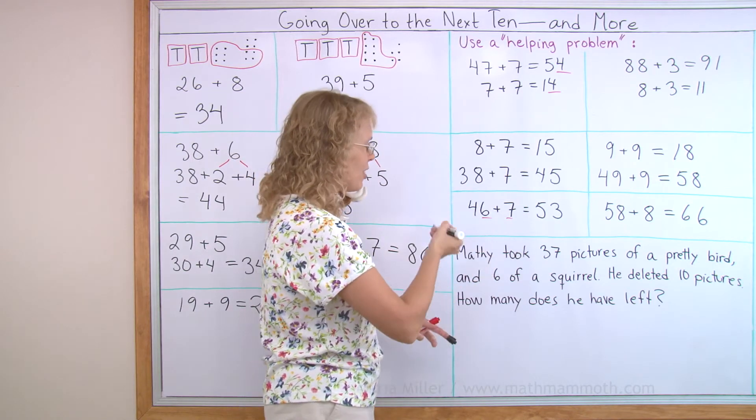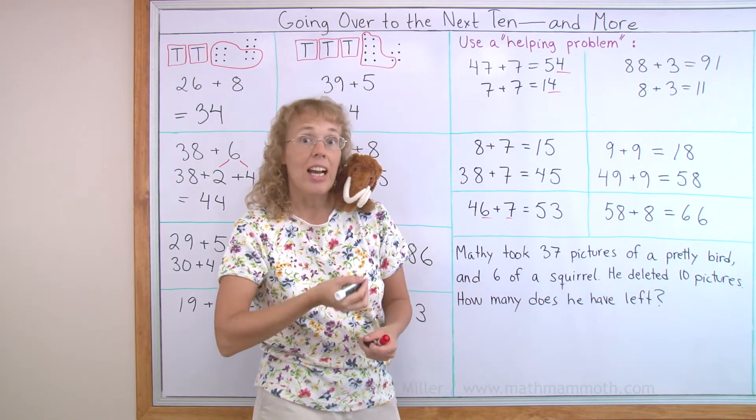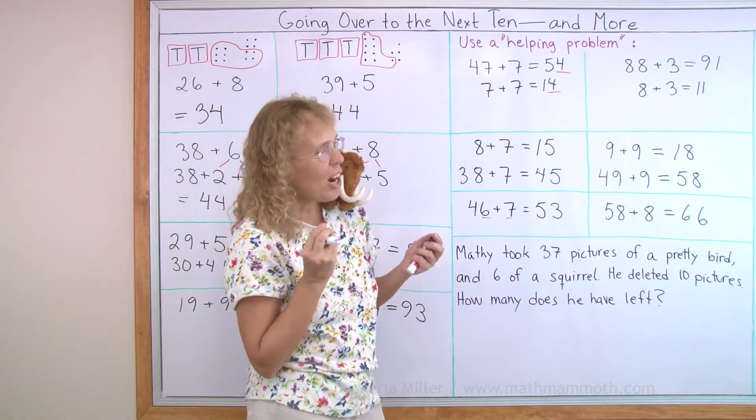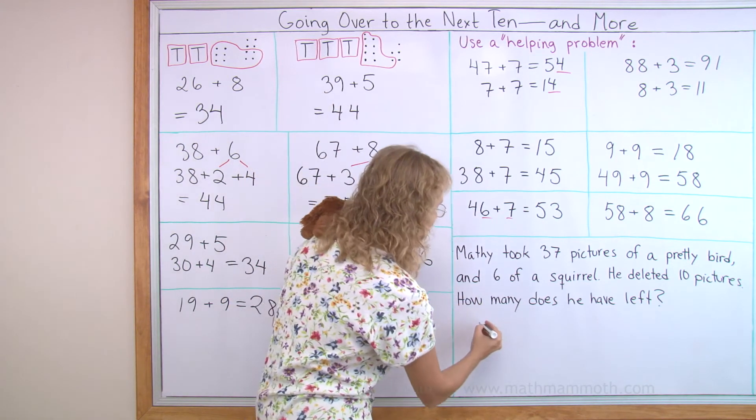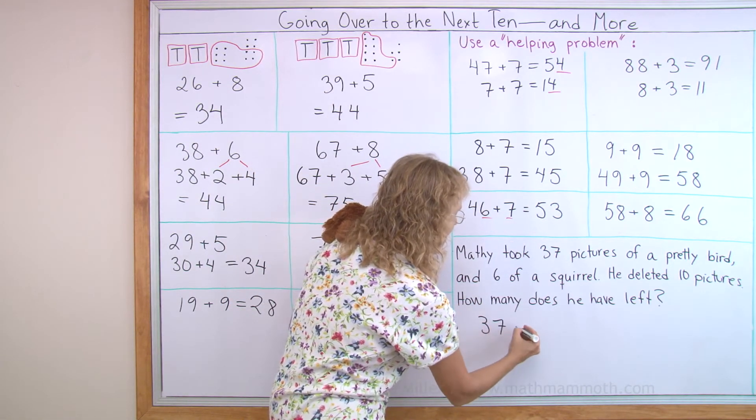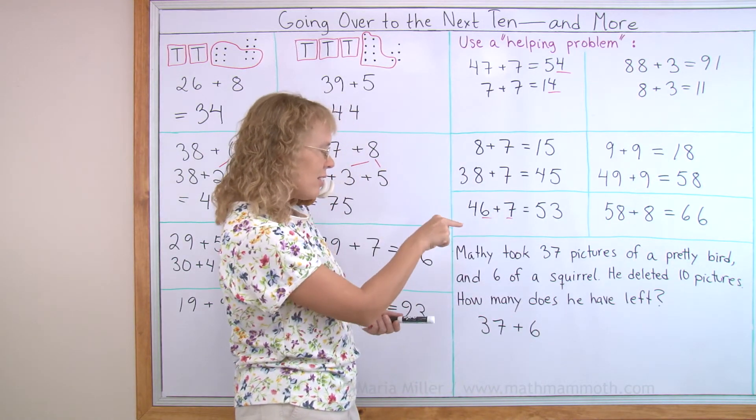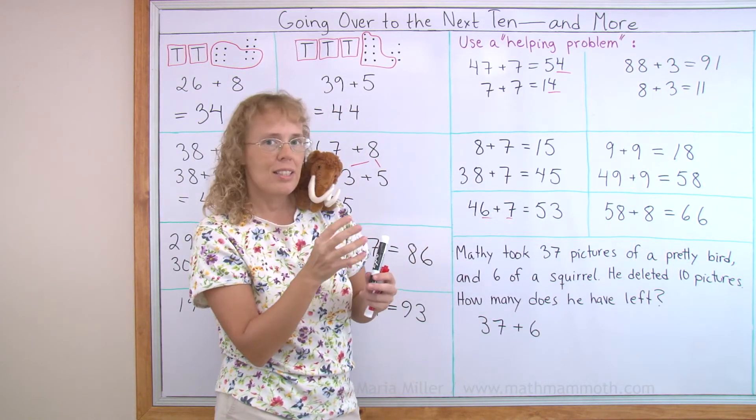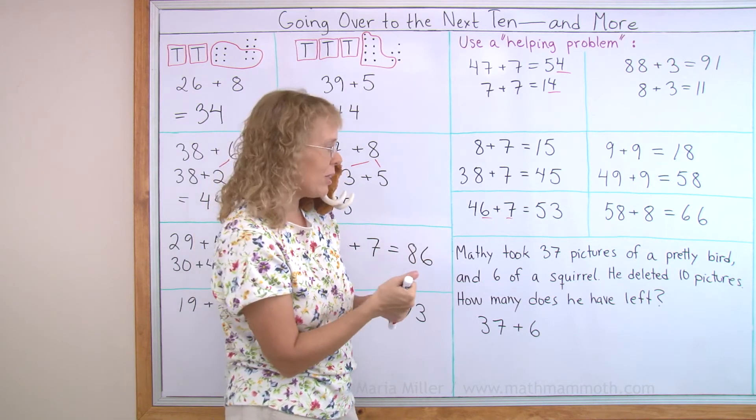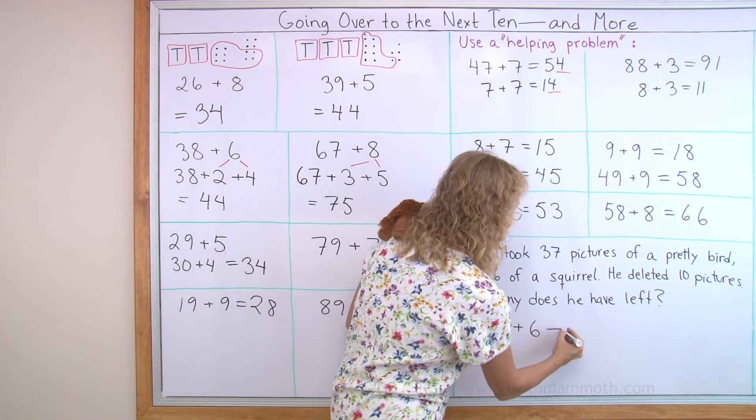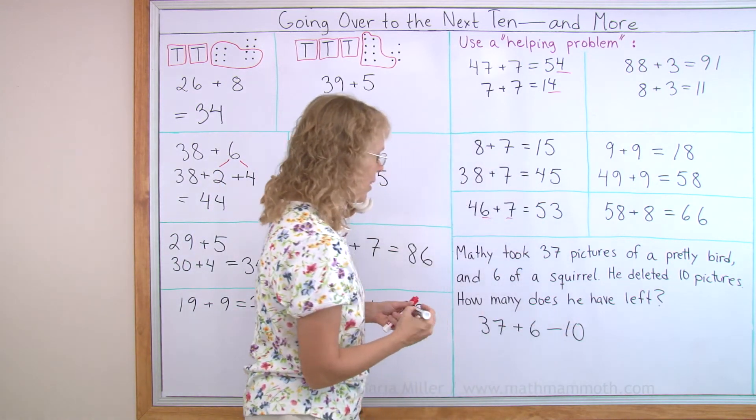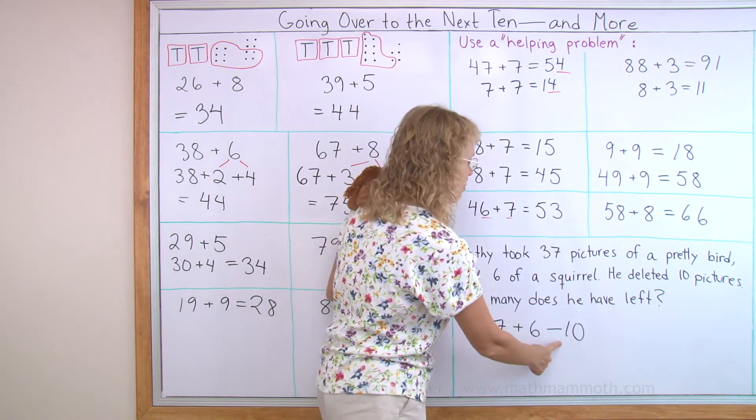I would first add 37 and 6, so we find out how many pictures he took. 37 and then add 6. And then the deleted means that he took away 10 pictures from his camera. So that means we subtract 10. First we add, then we subtract 10.